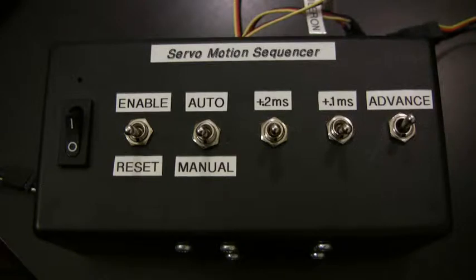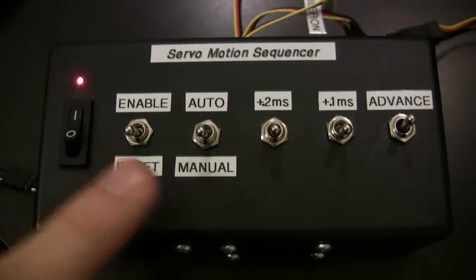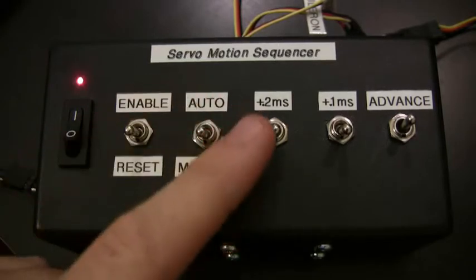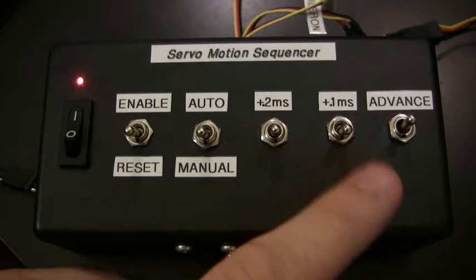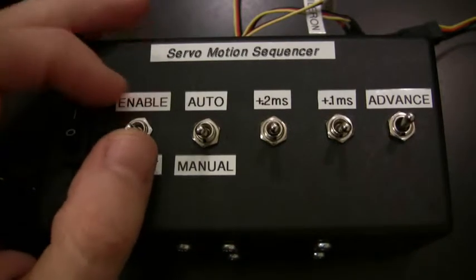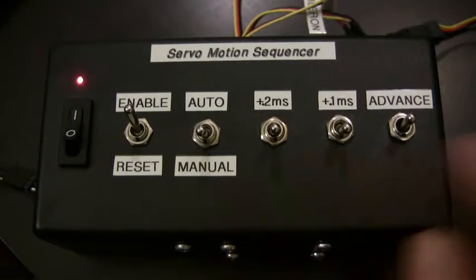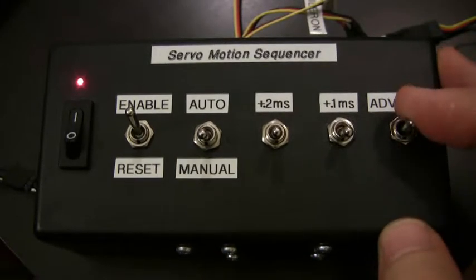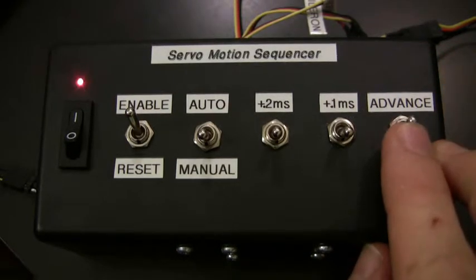So we can start a quick example run. If we turn on the device and it's still in reset mode, we'll leave it in manual mode, and then the plus 2 millisecond and the plus 0.1 millisecond we'll leave those in the off position. If we enable then the servo motion, the aileron starts to move, and because it's in manual it's expecting this advance command to move on to the next one. Each click of this advance switch then moves the servo to the next position.